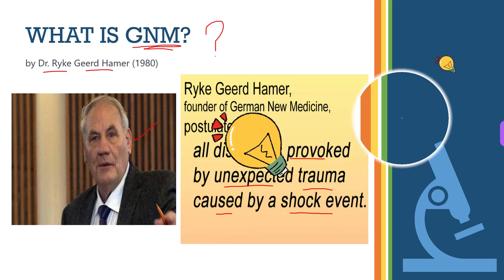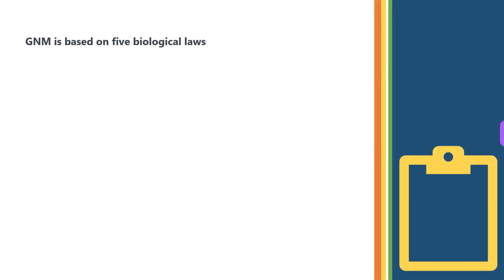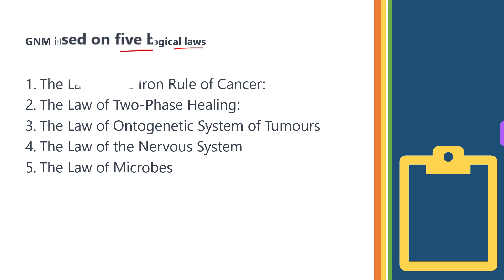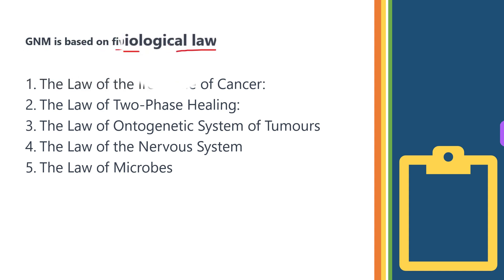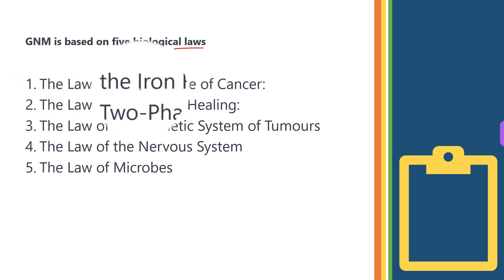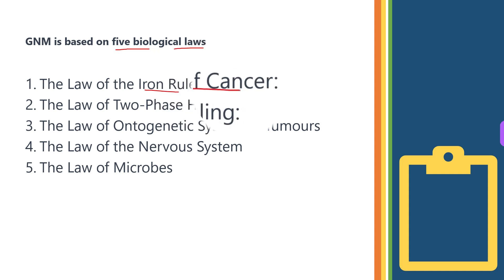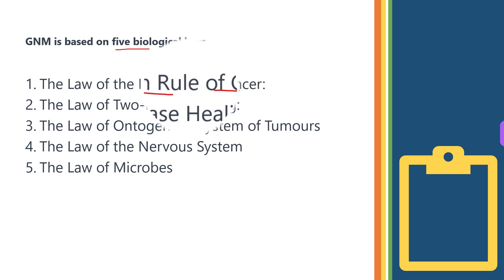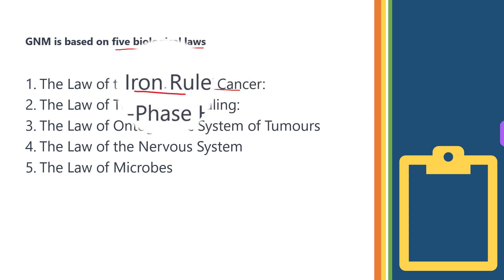Next we will discuss the five basic biological laws of GNM. GNM is based on five biological laws that explain the relationship between the psyche and the body, and how the psyche can affect the organs or tissues in question. The first biological law of GNM is the Law of the Iron Rule of Cancer. This law states that all cancers originate from a severe, acute, and isolating conflict shock that occurs simultaneously in the psyche, brain, and corresponding organs.